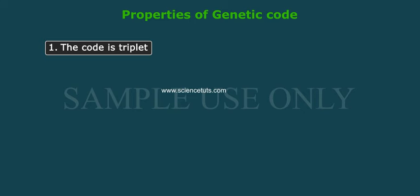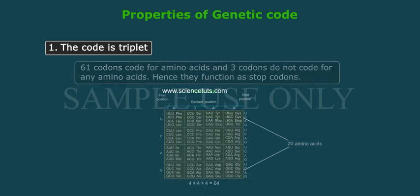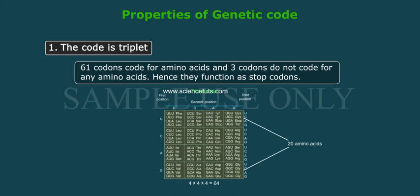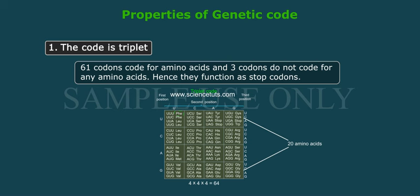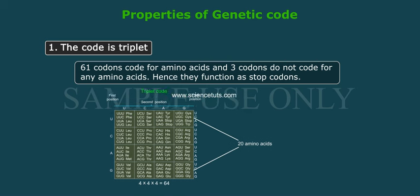Properties of genetic code. Property 1: The code is triplet. 61 codons code for amino acids, and three codons do not code for any amino acids. Hence, they function as stop codons.